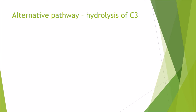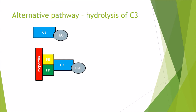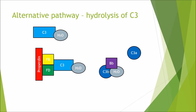The alternative pathway involves the spontaneous hydrolysis of C3 in the blood. Free-flowing C3 molecules bound to water, when combined with factor B, factor D, and properdin, facilitate the cleavage of C3 into C3a and C3b. C3a, the smaller fragment, promotes recruitment of other molecules and cells. C3b binds with Bb to form the C3 convertase, which can generate more C3 or continue the complement cascade.